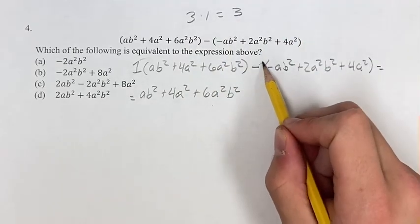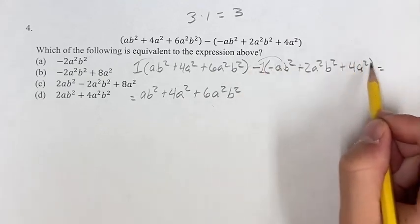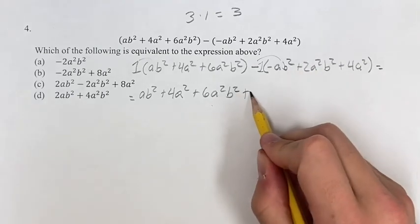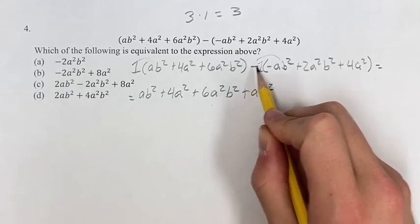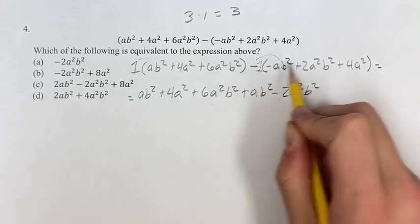Here, we have a minus sign, so this is sort of a negative 1, so we have to distribute the negative, and it's going to change the sign of all of these. So negative ab² becomes positive ab². Then negative 2a²b² and negative 4a².